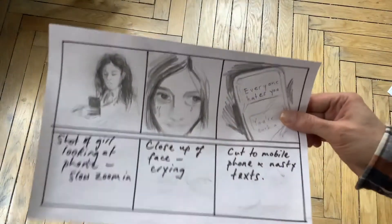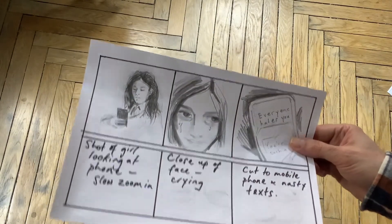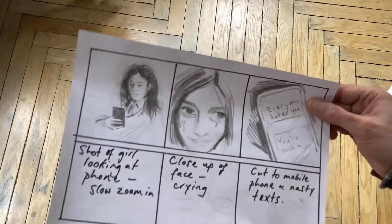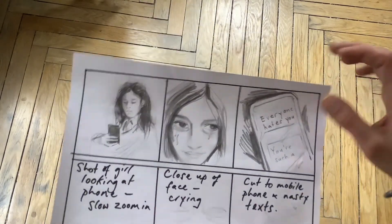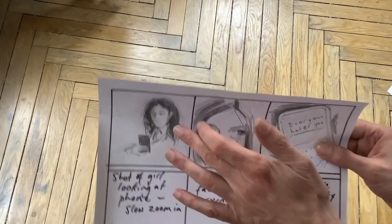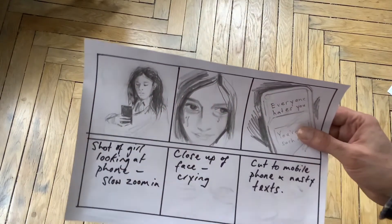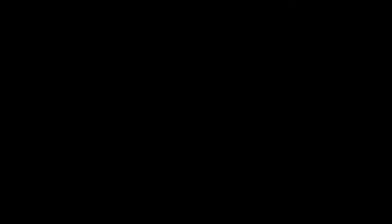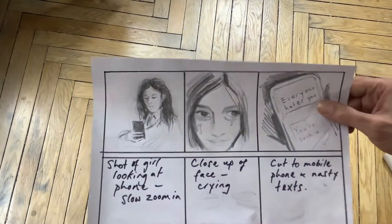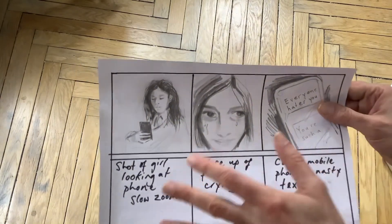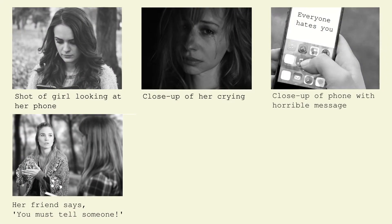A storyboard is a really good idea, particularly if you are going to make a drama type of movie. It looks like a comic strip, as you can see, and it shows you the action that will occur as well as the kind of shots you are going to take. You don't have to do the drawings in any real detail — in fact, you could use photos taken from the internet to make your storyboard.